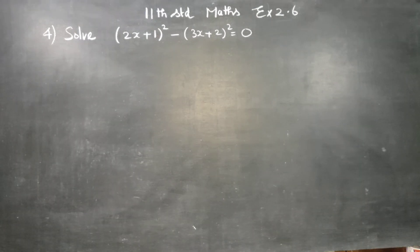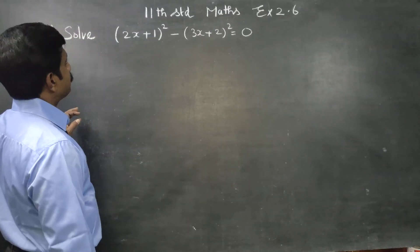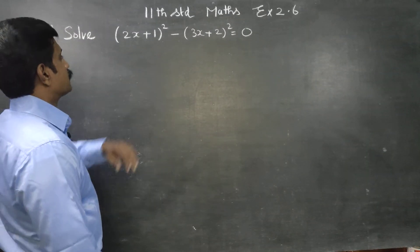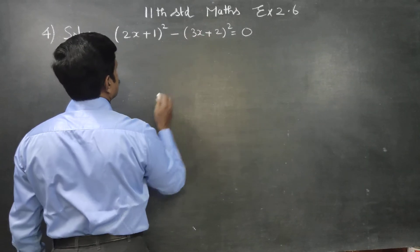Dear 11th standard students, in exercise number 2.6 basic algebra, sum number 4 we have to solve this. This is a square minus b square.